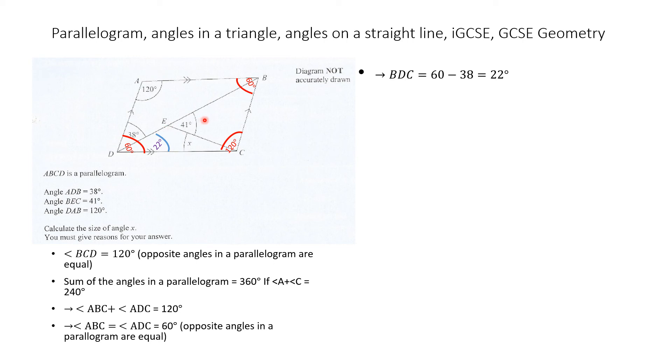Now for this angle at E, we know that the sum of the angles on a straight line is 180 degrees. If this angle is 41 degrees, that means the other angle will be 180 minus 41 degrees, which gives us 139 degrees.